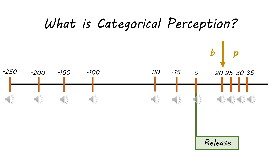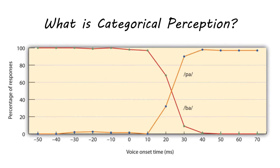You can see this when you ask a group of speakers to identify sounds in a row. At negative 50 milliseconds everyone identifies the sound as a 'b,' and somewhere between 10 and 30 milliseconds it switches over for English speakers. Right around 20 to 25 milliseconds is when people get really confused about whether it's a 'b' or 'p,' but then perception switches. That's categorical perception — two strong categories with a very small area of uncertainty in between.